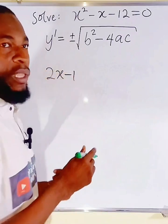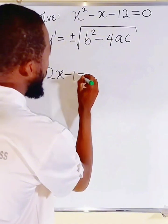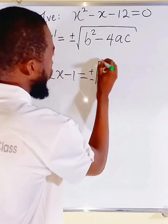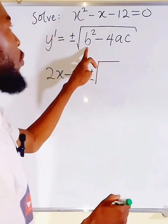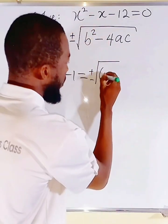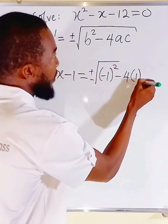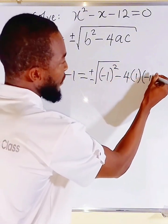Derivative of negative x will give us negative 1. So, we have negative 1 here. Derivative of constant is 0. We forget about it. So, this is equal to plus or minus the square root of b squared. Coefficient of x is negative 1. Negative 1 squared minus 4. A is 1. C is negative 12.